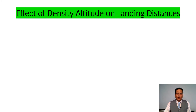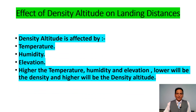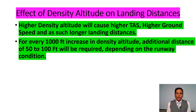We shall discuss the effect of density altitude on landing distances. The elements affecting density altitude are temperature, humidity, and elevation. Higher temperature, higher humidity, and higher elevation result in lower air density and higher density altitude. Higher density altitude causes higher true airspeed, higher ground speed, and consequently longer landing distances. For every 1,000 feet increase in density altitude, an additional 50 to 100 feet of landing distance will be required, depending on runway condition.